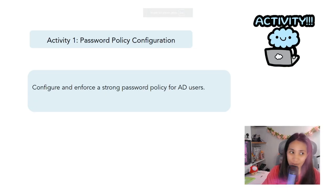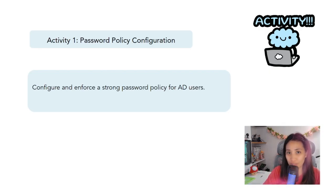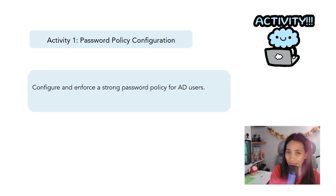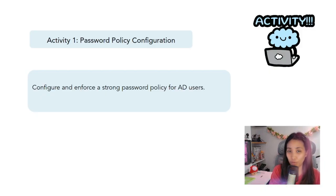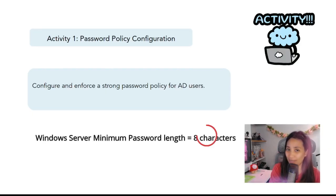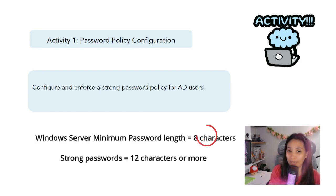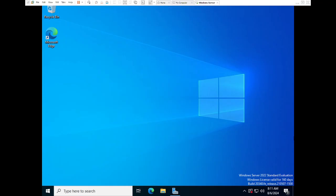For our first activity we are going to do password policy configuration and enforce a strong password for all of our Active Directory users. We are going to configure the minimum password length, password complexity, and password age. The default minimum password in Windows Server is eight characters, but that is no longer the standard — it should be at least 12 characters or more to make it strong in this digital age.